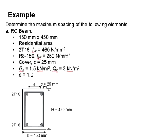Let us try some examples to determine the maximum spacing of reinforced concrete elements. This is an RC beam with dimensions 150 mm by 450 mm.